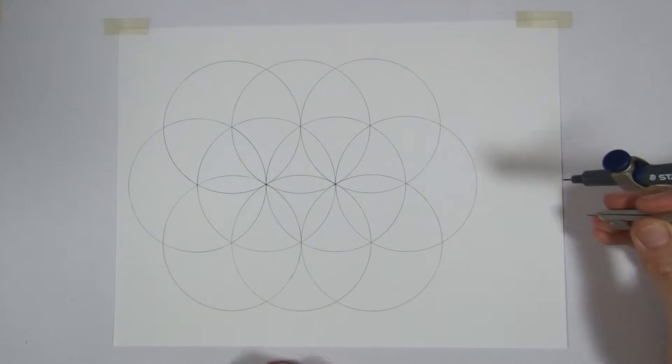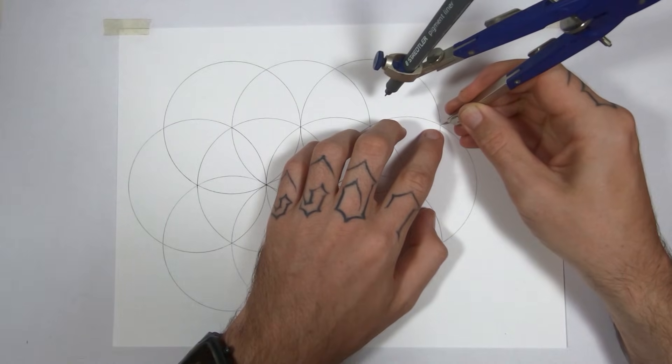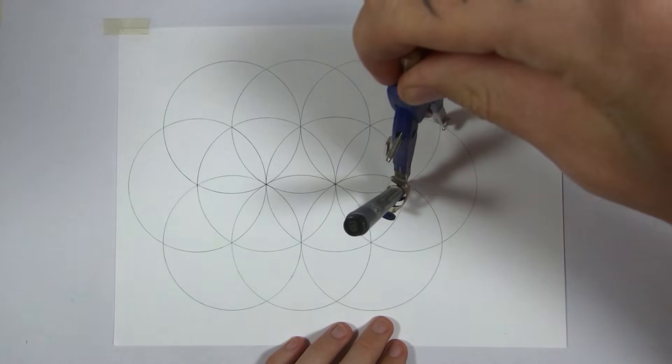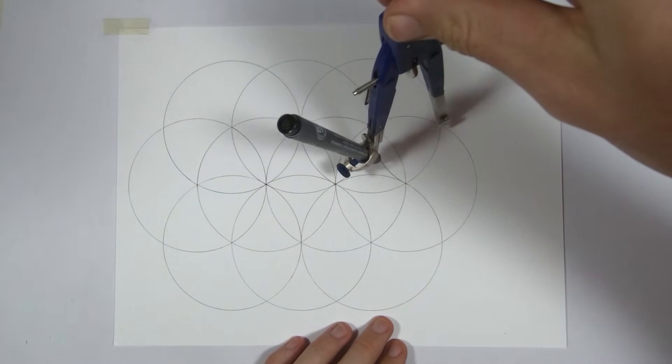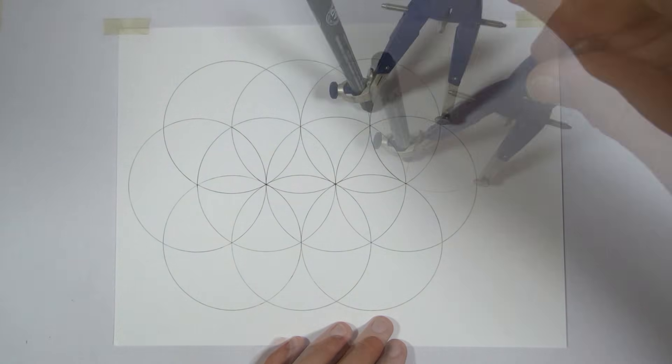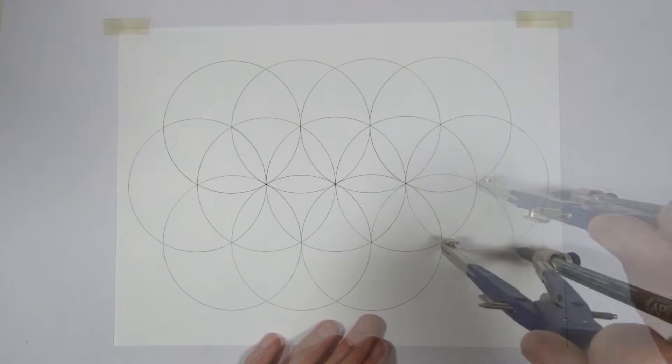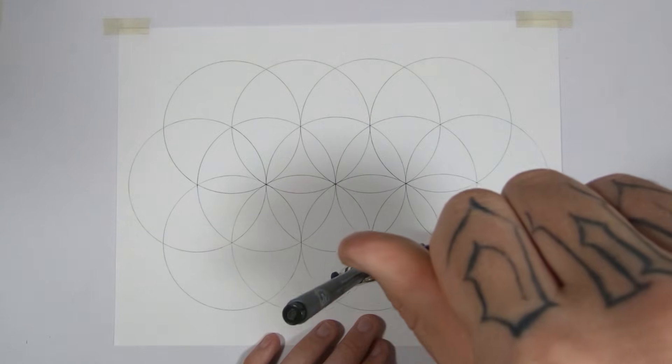All right, that's the left one done. I'll do the same on the right. So what I'm making here is three rows of circles: four on the top, five in the middle and four on the bottom. That's my rows of four, five and four.